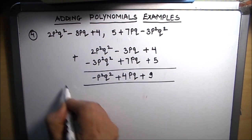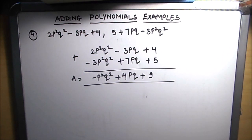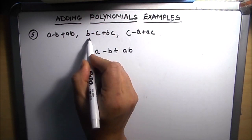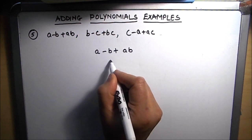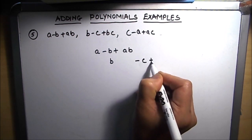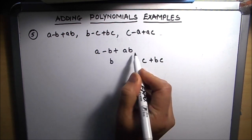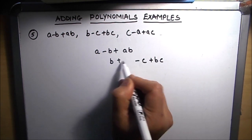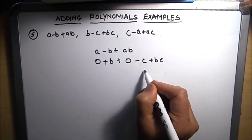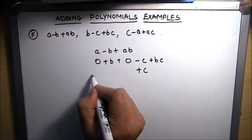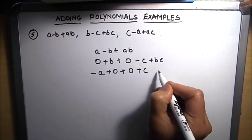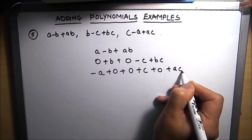Let's move to our next and last example. The first term is A minus B plus AB. The second term is B minus C, with B written under B. Then minus C plus BC. For empty positions, we can write plus 0 as a placeholder. Next is C minus A, written as plus C minus A, with plus 0 for missing B term, plus 0 for missing AB term, and plus AC.